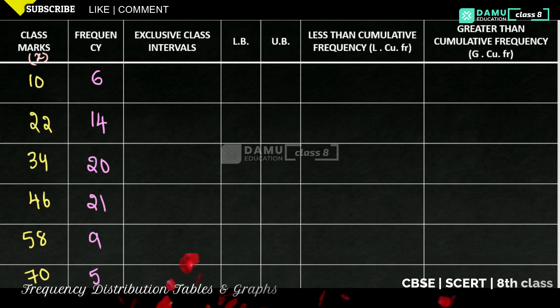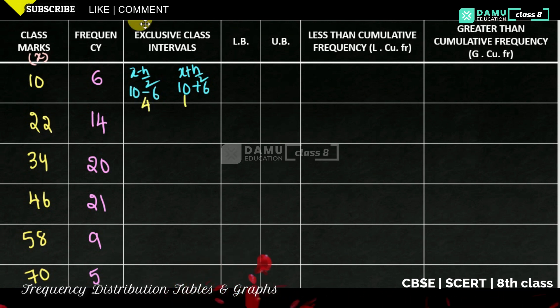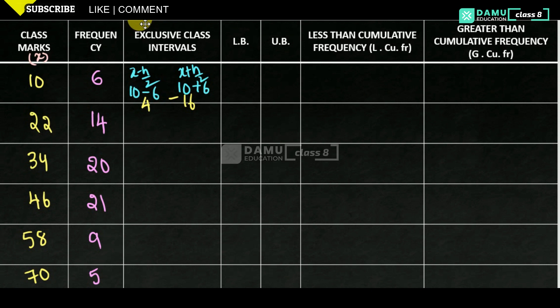For exclusive class intervals: lower limit = x minus h/2, upper limit = x plus h/2. For the first class mark 10: lower limit = 10 minus 6 = 4, upper limit = 10 plus 6 = 16. So the first class interval is 4 to 16.